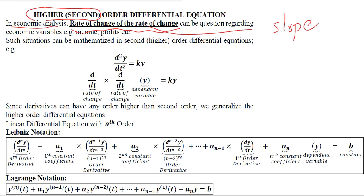Even in economic analysis, the meaning remains the same. For example, we might be interested not just in the rate of change of income, but how this rate of change of income changes over time — that is, the rate of change of the rate of change of income. It means that if income is changing, we can measure its rate of change. But is this rate of change getting faster, remaining the same, or becoming slower over time? This is another meticulous level of observation on how changes in income are taking place.